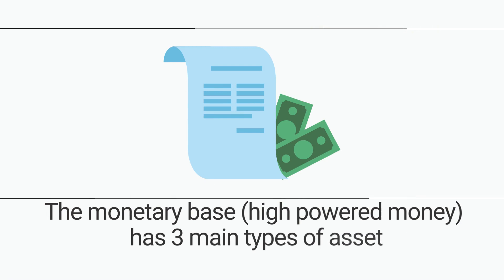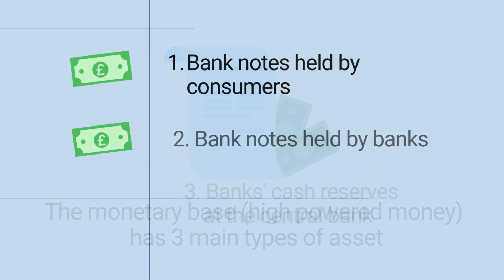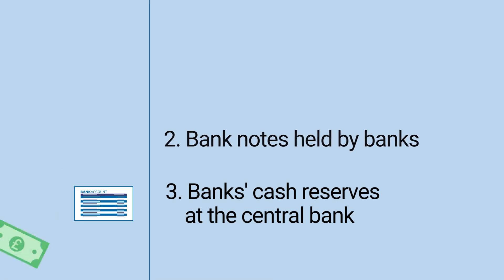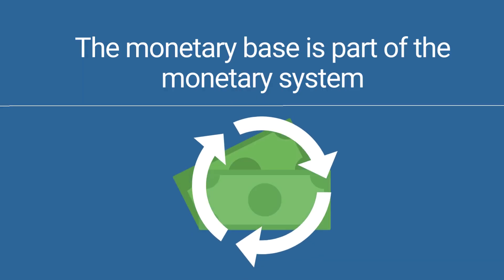So the monetary base — high-powered money, whatever you want to call it — has three main types of asset. It has the money that we, the public, hold in the form of notes, legal tender notes; it has banks' own till money, also in the form of legal tender notes; and then it has banks' cash reserves, commercial banks, as a liability of the central bank, and that's part of the monetary system.